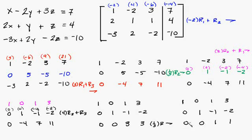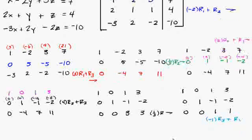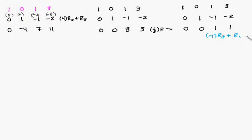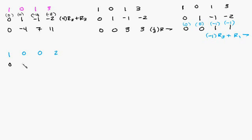Strategically I'm doing that because I've got 0s here and they won't affect these numbers. So we're going to multiply row 3 times negative 1 and add it to row 1. Negative 1 times 0 is 0, 0, this becomes negative 1, and this becomes negative 1. Then adding: 0 and 1 is 1, 0, negative 1 plus 1 is 0, and negative 1 plus 3 is 2. Copy everything else down: 0, 1, negative 1, negative 2. 0, 0, 1, 1.